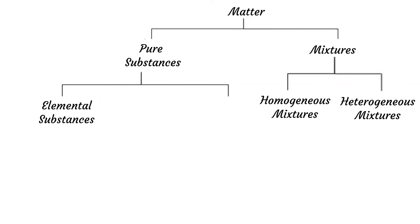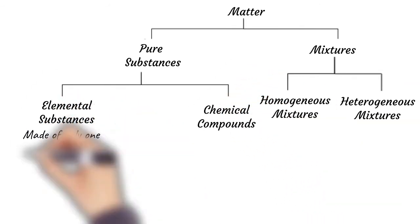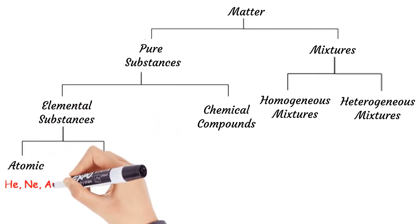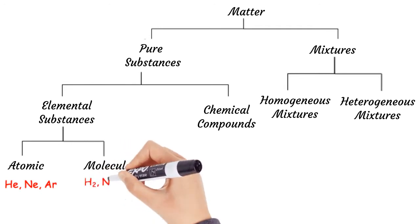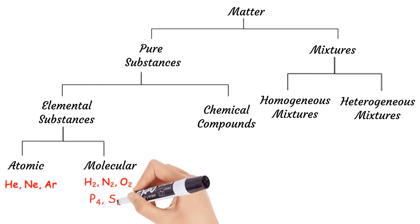Elemental substances are made of only one type of atom. These can be monoatomic such as helium, neon, argon; diatomic molecules such as hydrogen, nitrogen, and oxygen; or multi-atomic molecules such as phosphorus and sulfur.